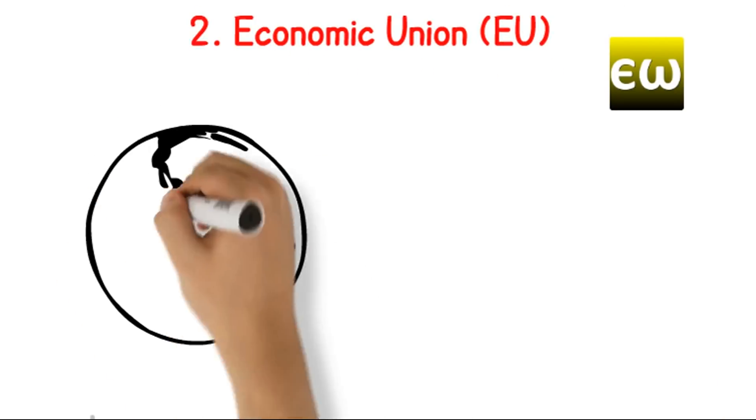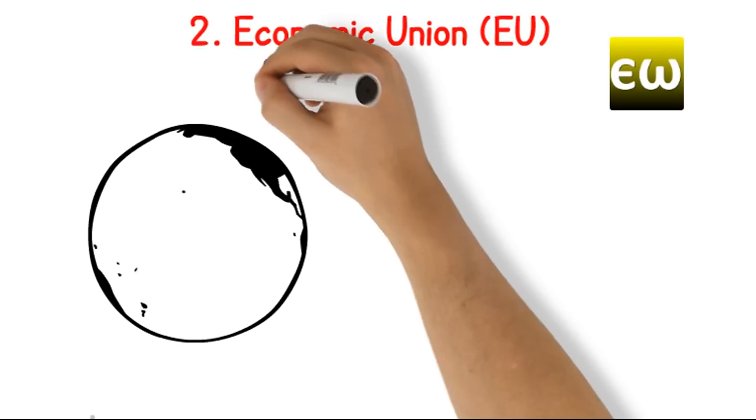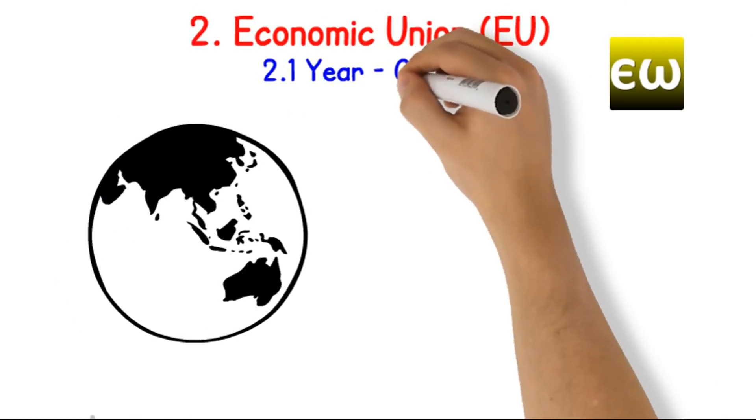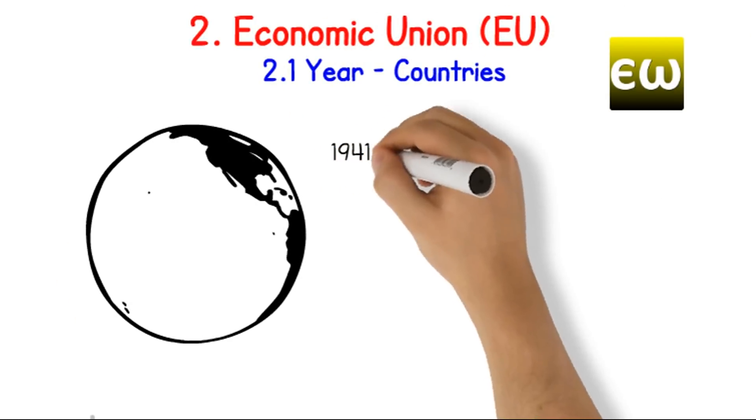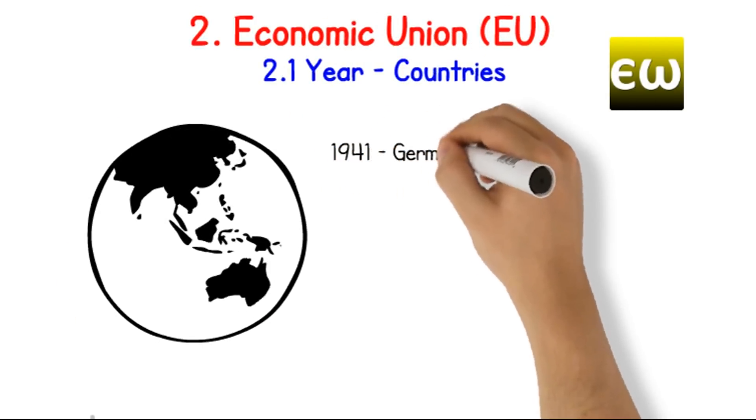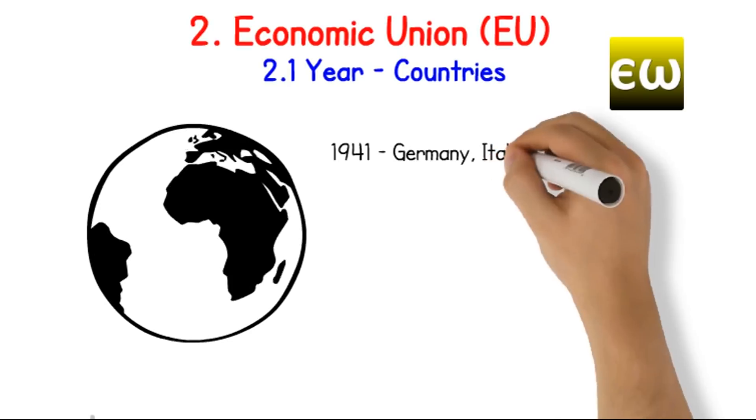Economic Union. Year and countries. 1941: Germany, Italy, and Netherlands.